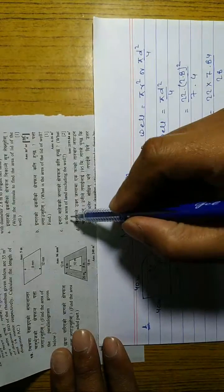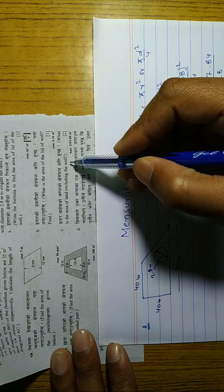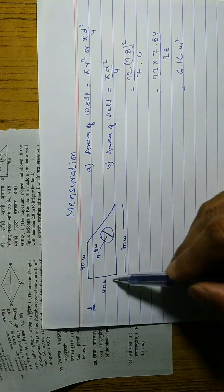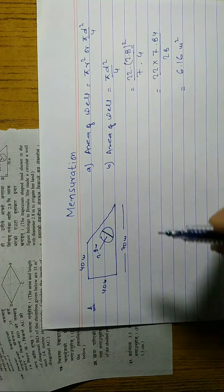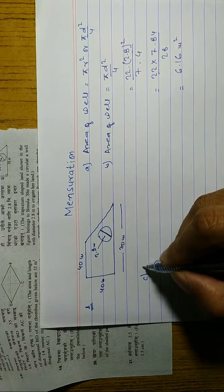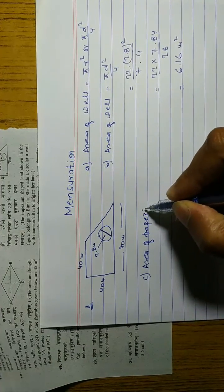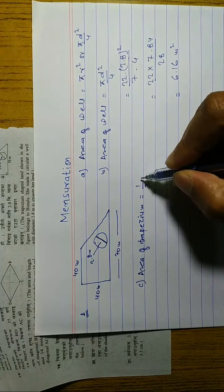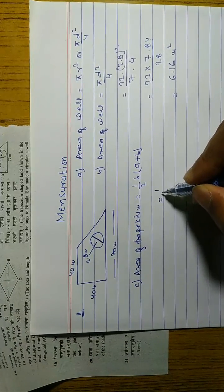This is a model-based question and very important. Question (c): find the area of land excluding the well. The land is a trapezium. To find the area excluding the well, we subtract the area of the well from the area of the trapezium. First, find the area of the trapezium. Formula: Area of trapezium = (1/2) × h × (a + b).